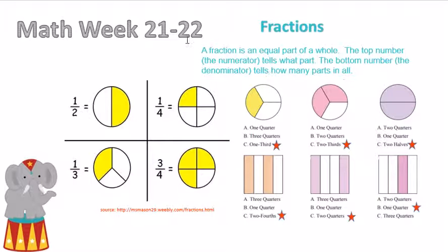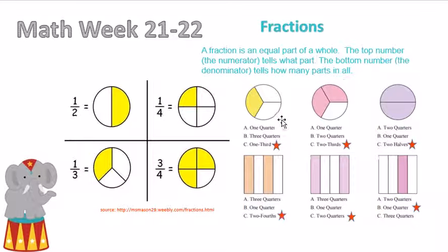If we look at these fractions over here, we want to name them in words and not in numbers. If we have three parts, we name it thirds — the bottom number will be thirds. If we have four parts, then we will name it fourths.